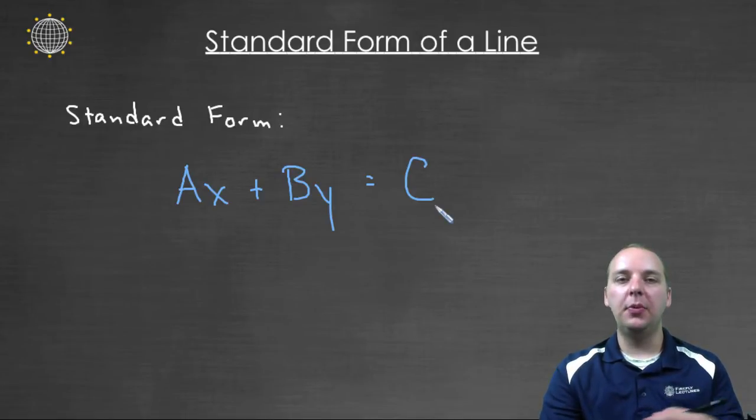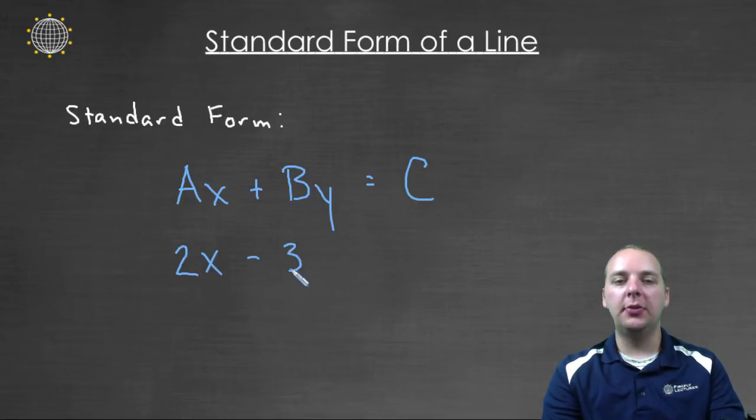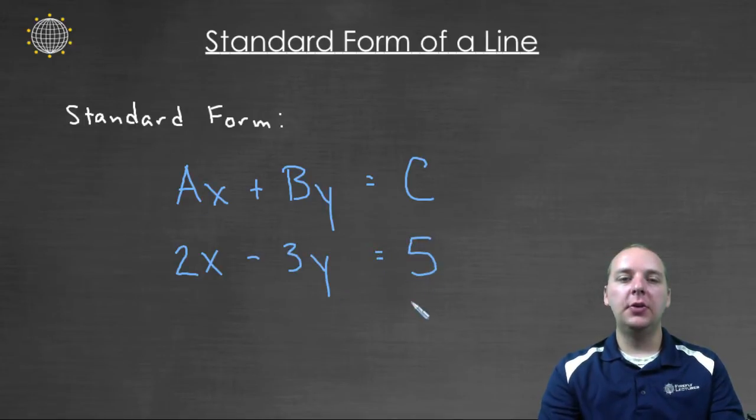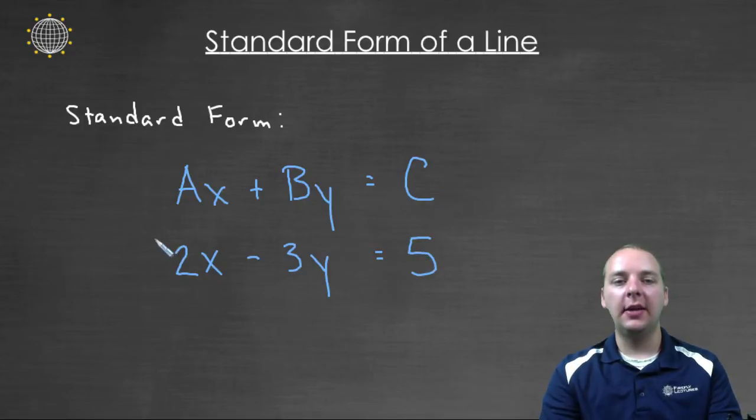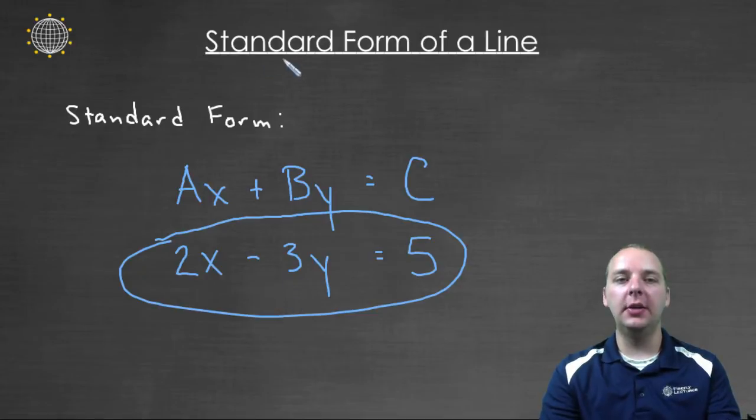So for example, an equation in standard form might look like this. You might have two X minus three Y equals five. So the A is two, the B is negative three, and the C is five, and this linear equation is written in what we call standard form.